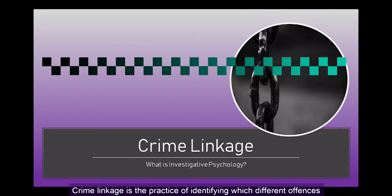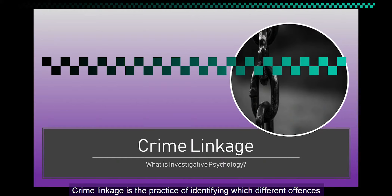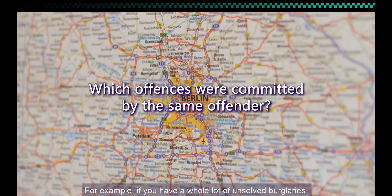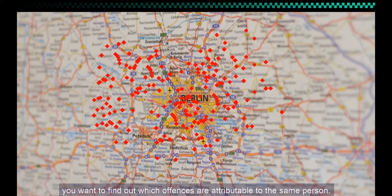Crime linkage is the practice of identifying which different offences were committed by the same offender. For example, if you have a whole lot of unsolved burglaries, you want to find out which offences are attributable to the same person.